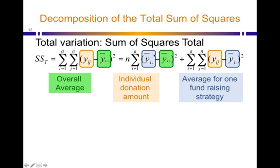And so here's the missing one. This is the sum of squares for the treatment. And you can see mathematically what's really clever they've done is they've taken the total sum of squares and broken it down into the amount between levels and the amount within levels. And in this case, it's the difference between the average for one fundraising strategy and the overall average squared.